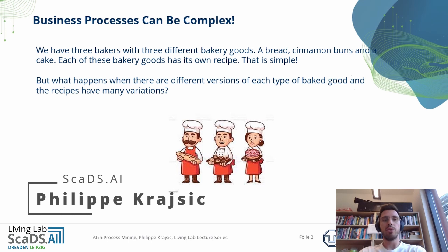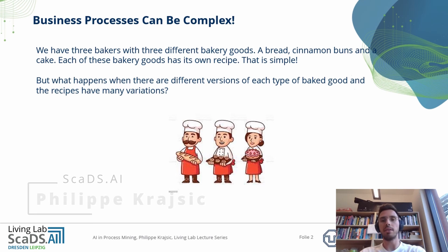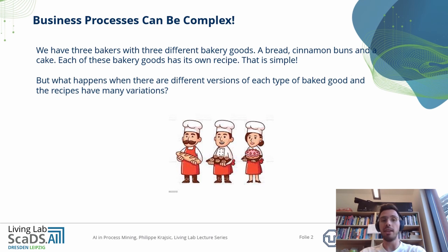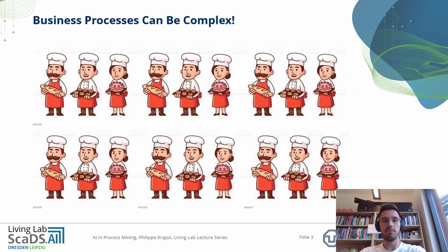We have three bakers with three different bakery goods: a bread, cinnamon buns, and a cake. Each of these bakery goods has its own recipe — that simple. But what happens when there are different versions of each type of baked good and recipes have many variations? So different kinds of bread, different kinds of cinnamon buns, and different kinds of cakes.